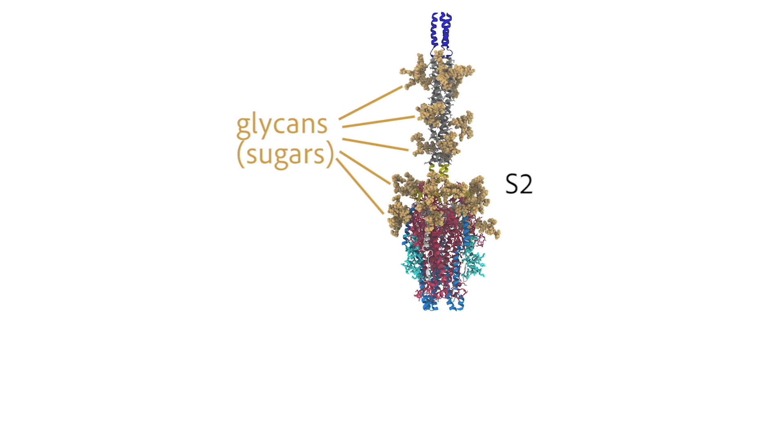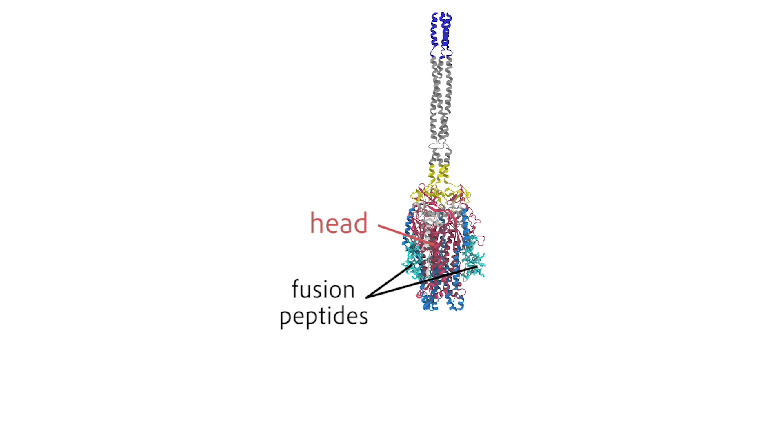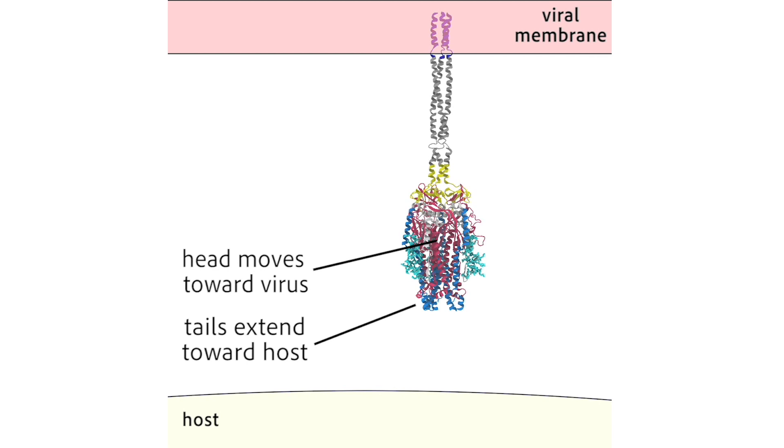After the S1 subunit dissociates you see the S2 which is covered in glycans or sugars. You also see the head domain and the fusion peptides which we are going to focus on.